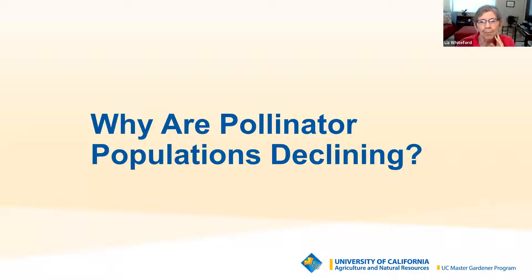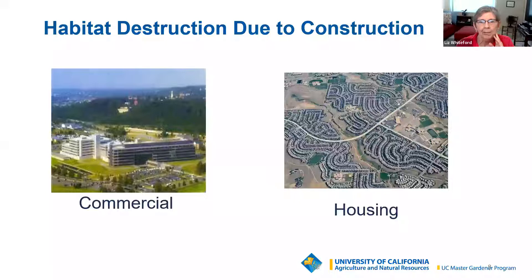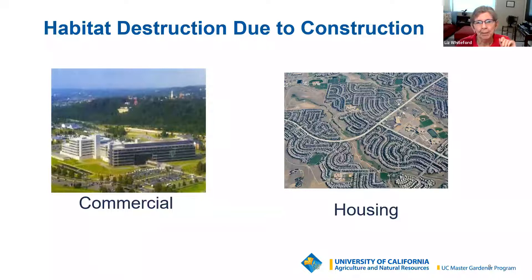So why are the pollinator populations declining? Habitat destruction due to construction — subdivisions sprawling throughout the East Bay and commercial development. Many of you may remember what the East Bay looked like 15 or more years ago — a very different place, destroying the habitat for our bees and pollinators.